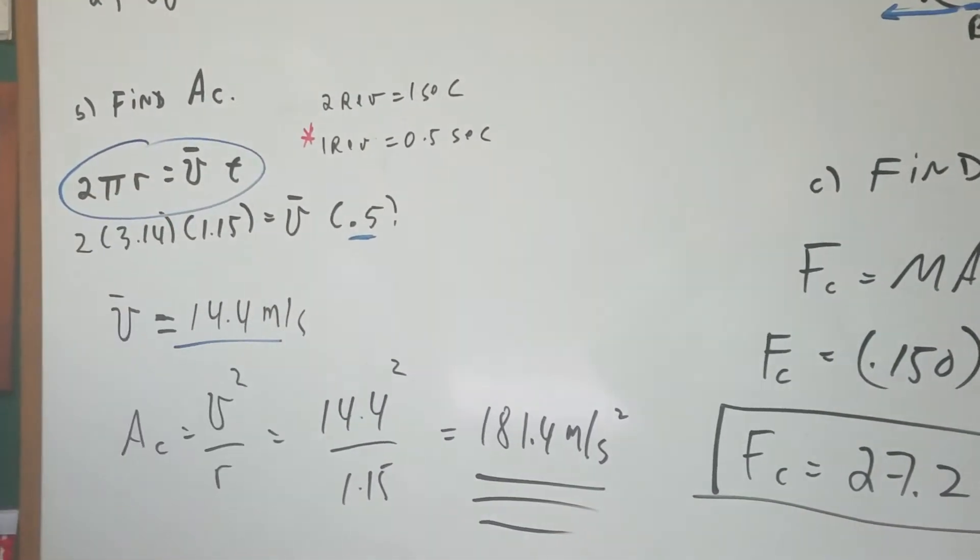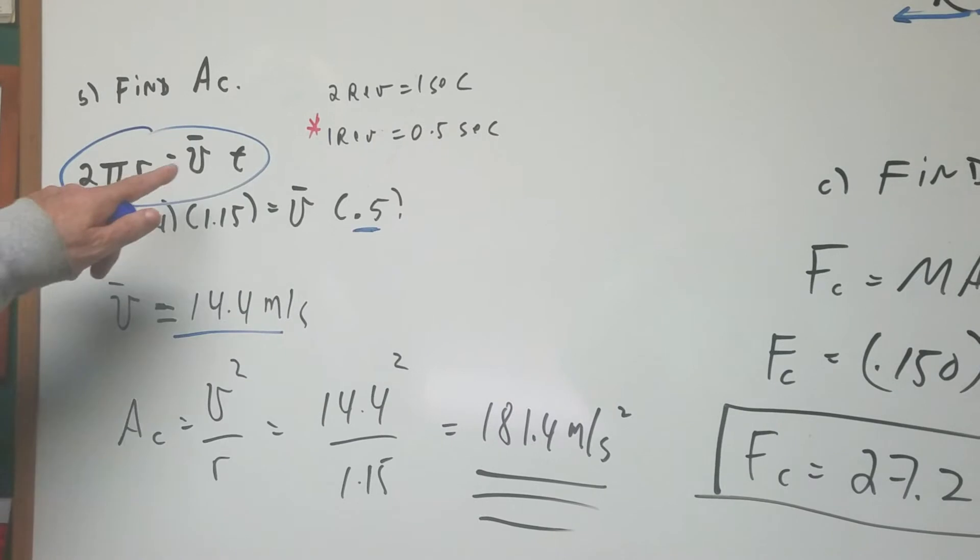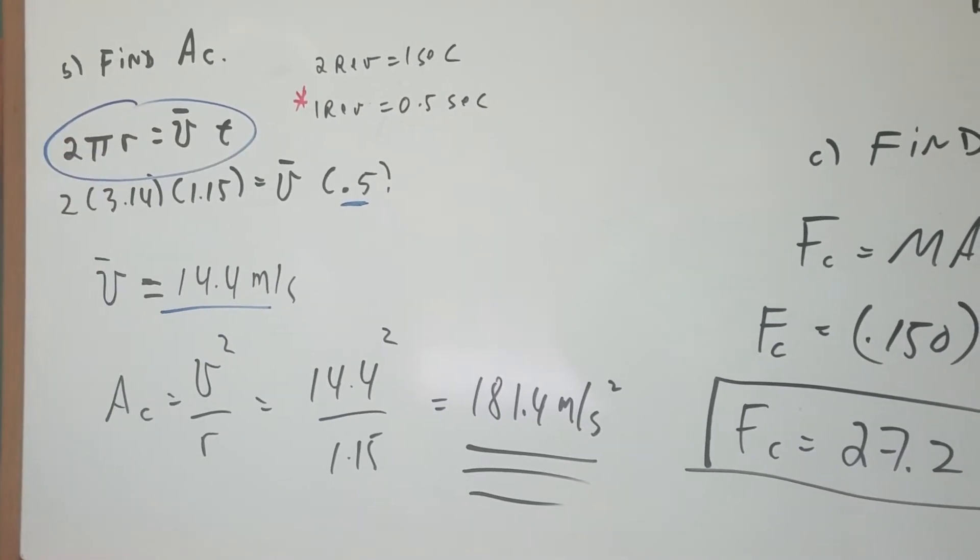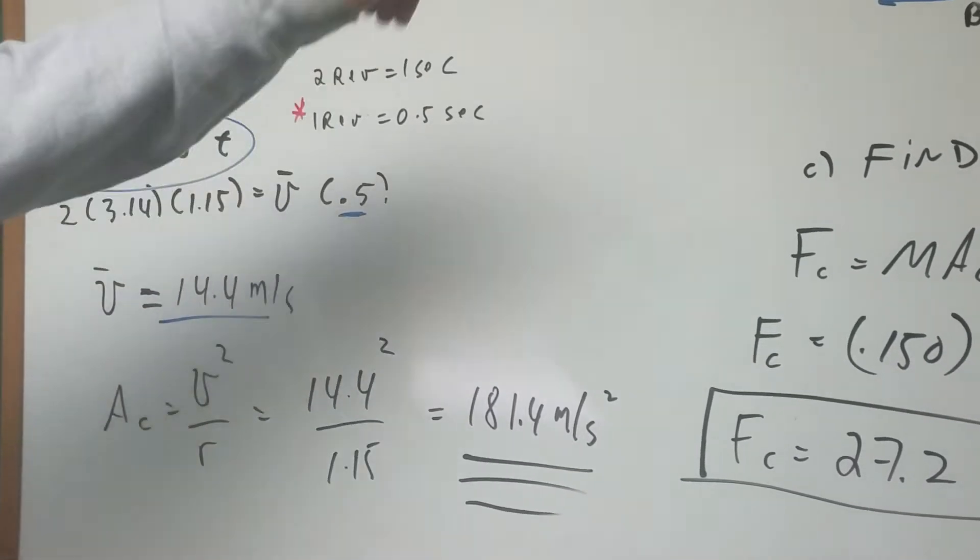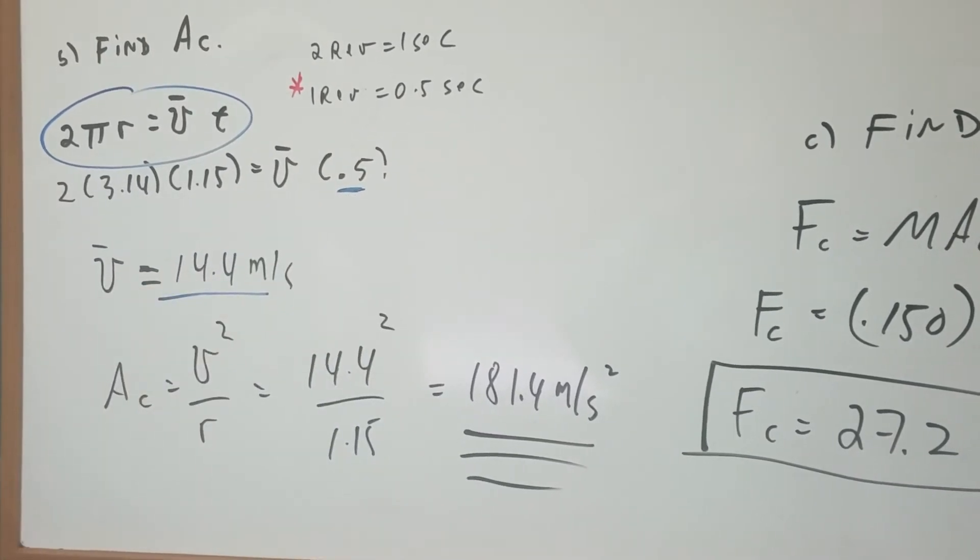Here's the key formula you're going to use if you're ever given revolutions in time: 2πr = vt, where this is the circumference, which is the distance around the circle. Plugging it in, 2πr, there's the radius that was given, there's the time that we got. We got the velocity.